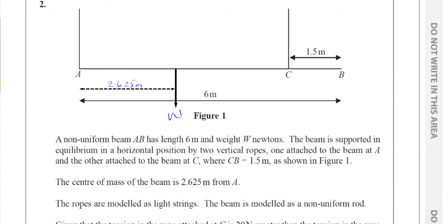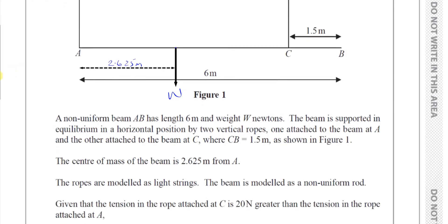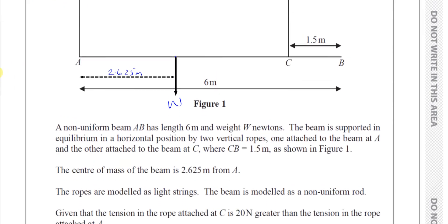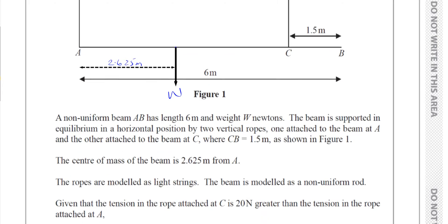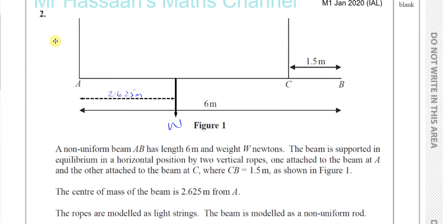It tells us the ropes are modeled as light strings, so we don't care about their weight. We ignore their weight. The beam is modeled as a non-uniform rod. Okay, as we know already. Given that the tension in the rope attached at C is 20 newtons greater than the tension of the rope attached at A.